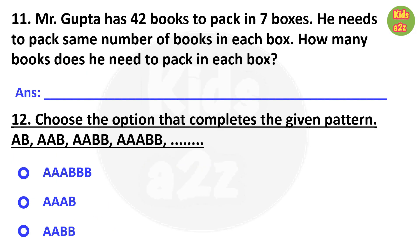Question 11: Mr. Gupta has 42 books to pack in 7 boxes. He needs to pack the same number of books in each box. How many books does he need to pack in each box? Mr. Gupta needs to pack 42 books in 7 boxes, so we divide 42 by 7, and the answer will be 6 books per box.